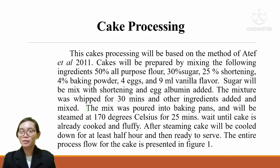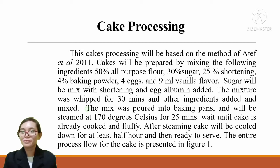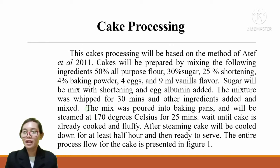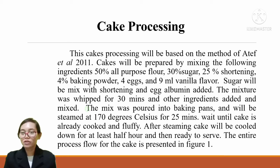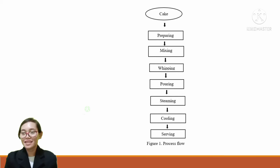Cake Processing: Cake processing will be based on the method of Atef et al., 2011. Cakes will be prepared by mixing the following ingredients: 50% all-purpose flour, 30% sugar, 25% shortening, 4% baking powder, 4 eggs, and 9 ml vanilla flavor. Sugar will be mixed with shortening and egg albumin added. The mixture will be whipped for 30 minutes, then other ingredients added and mixed. The mix will be poured into baking pans and steamed at 170 degrees Celsius for 25 minutes. After steaming, the cake will be cooled down for at least half an hour and then ready to serve. The entire process flow for cake processing is presented in Figure 1.